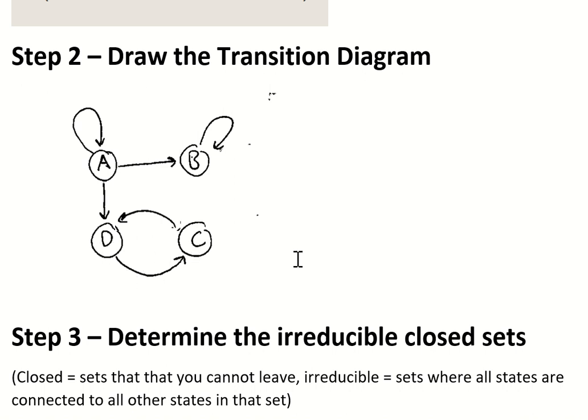Irreducible sets are sets where all of the states in those sets are connected to each other. For example, in this D and C again, D and C are connected.